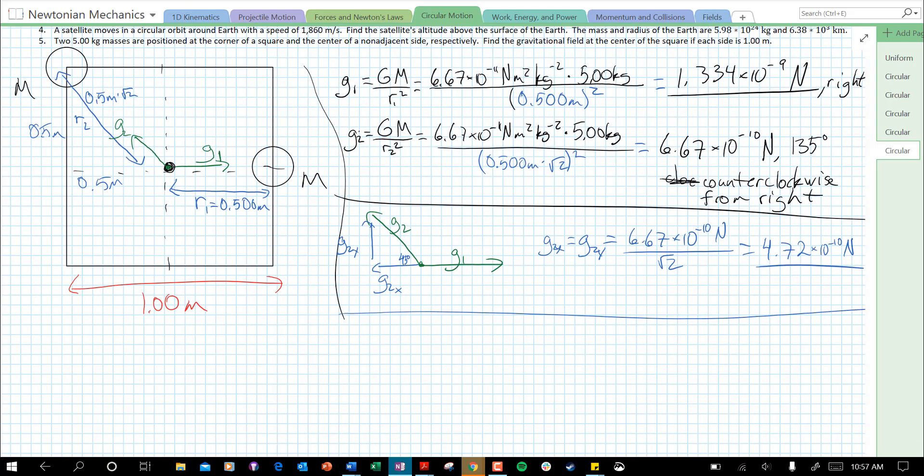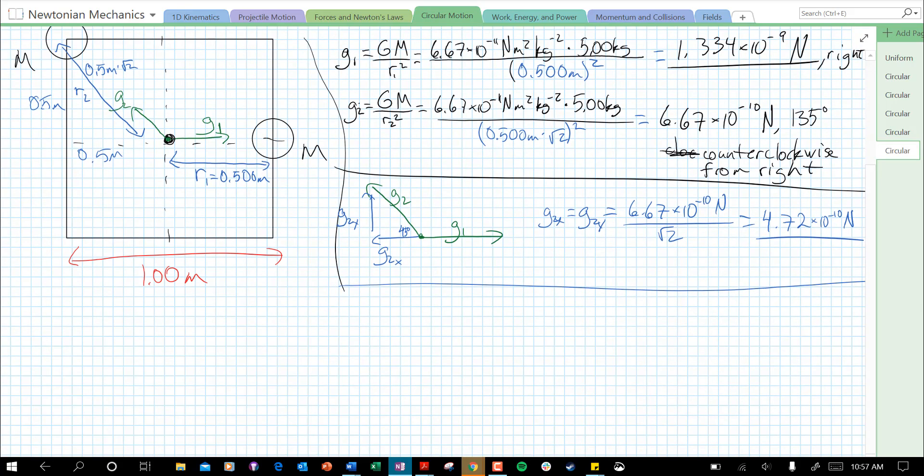Now, last thing we need to do is find the total x component, total y component, and then sum them to find the resultant. I'm going to do that over here on the left. Our total x, I'm going to write it as G total x. Well, we have a rightward component from G1, so we can call that positive.